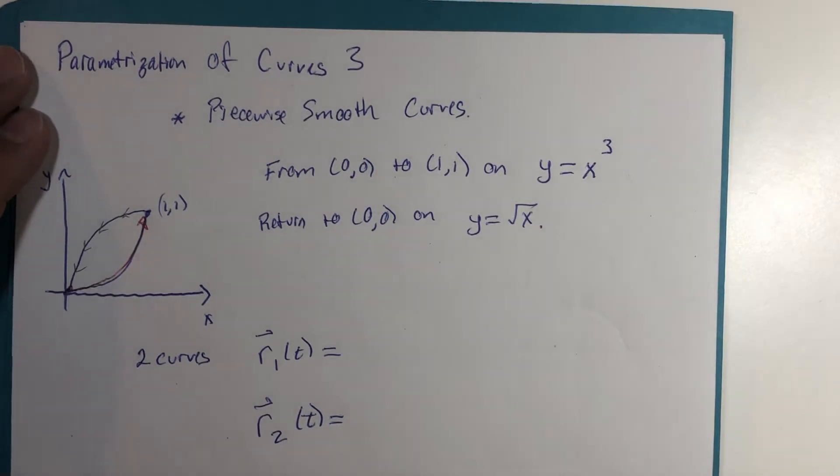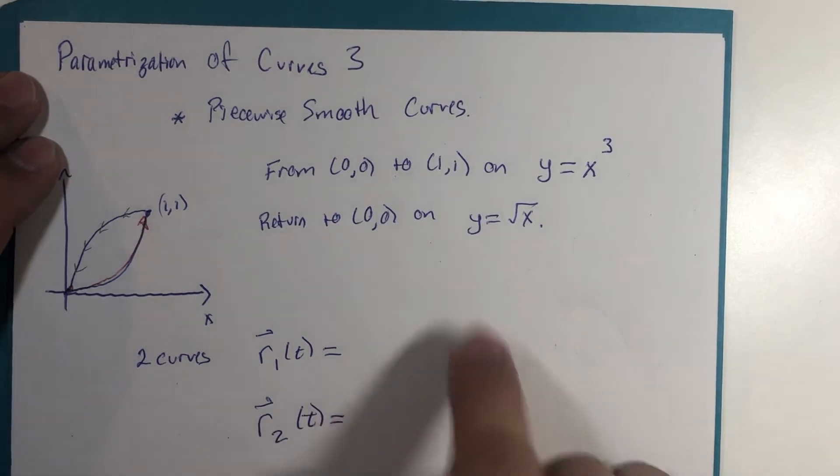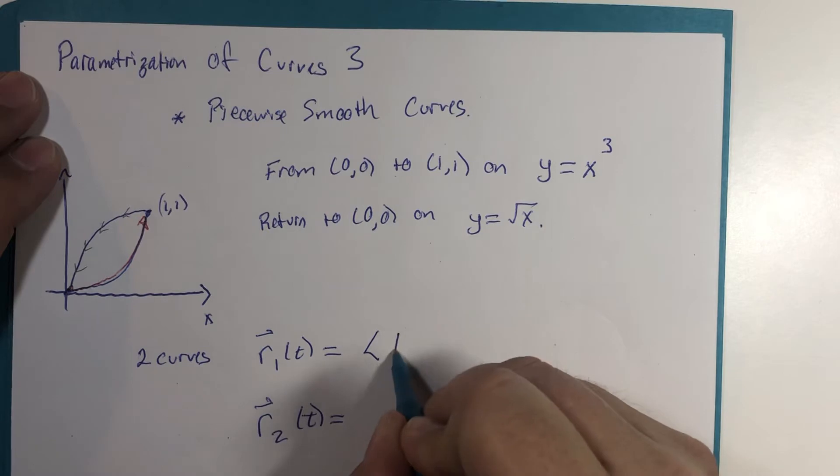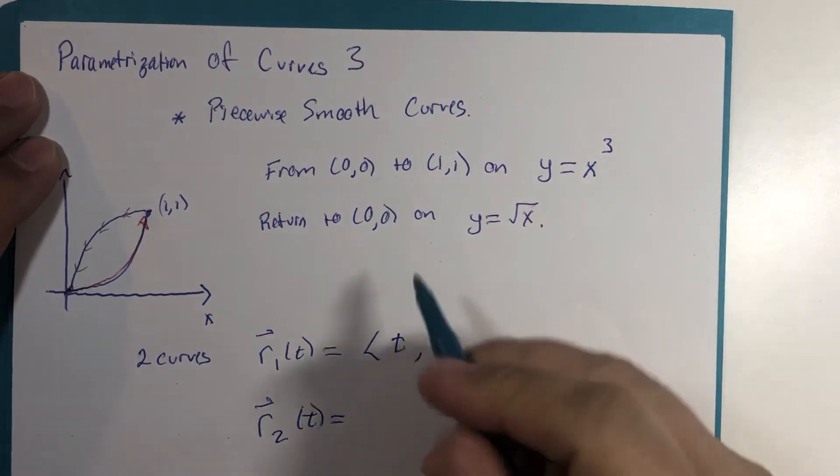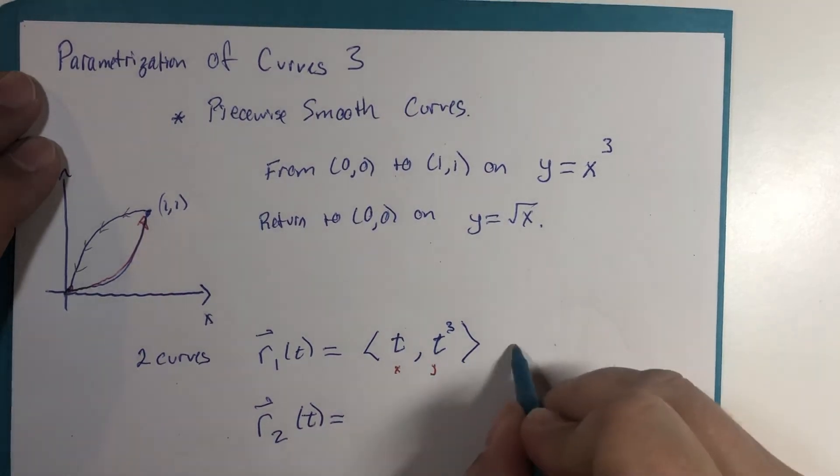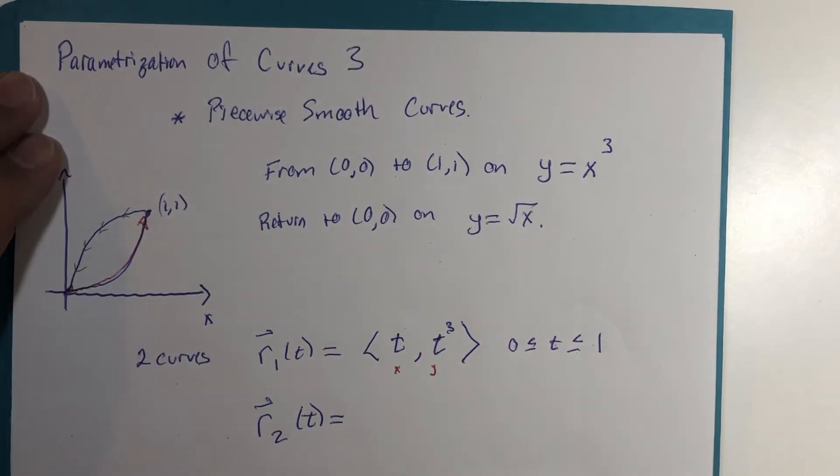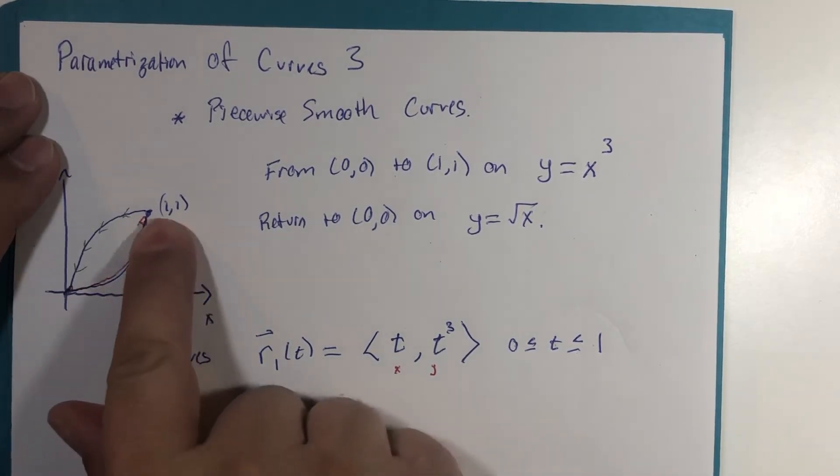All right, now the first piece is pretty straightforward. If x is t then y equals t³, a standard function substitution. If this is x then this is y, and our time interval would be from time zero to time equals one. This would represent from (0,0) to the point (1,1) on this portion of the curve.